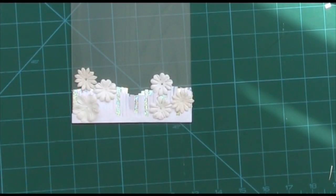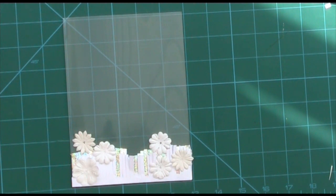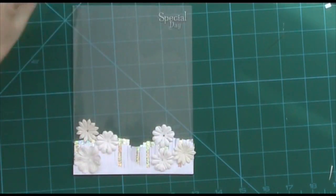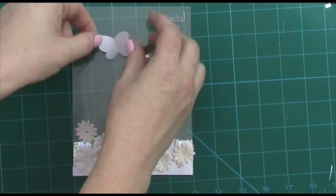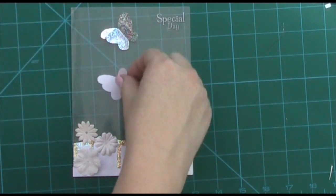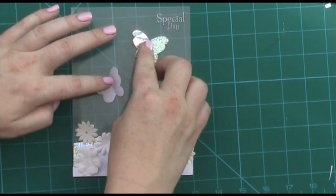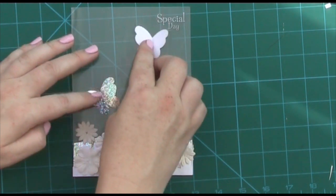And then the next thing I need to do is put my sentiment in position because that will affect where I'm going to put my butterfly. See, that looks fab. Okay, and then we've got my butterflies. I've got my silver one and my white one and I'm going to put the white one up the top there I think and the silver one down there.